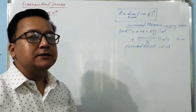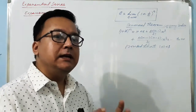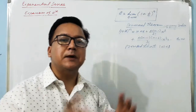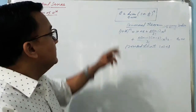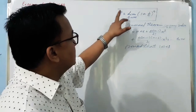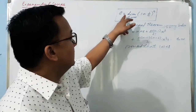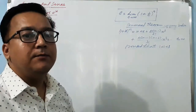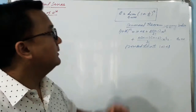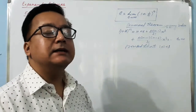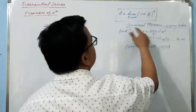Before finding the expansion of e raised to power x, it's mandatory to know the value of e. The value of e is an irrational number whose value lies between 2 and 3. It is defined as: e is equal to the limit of (1 + 1/n) raised to power n as n tends to infinity. Using this, we can find the value of e.